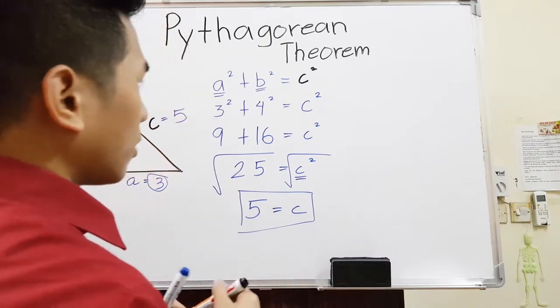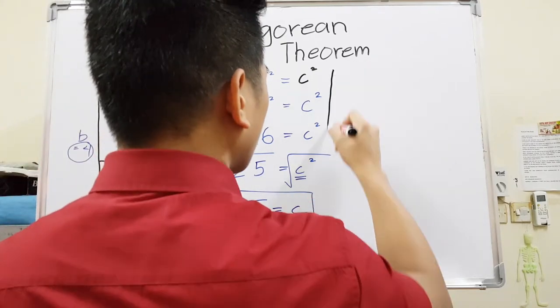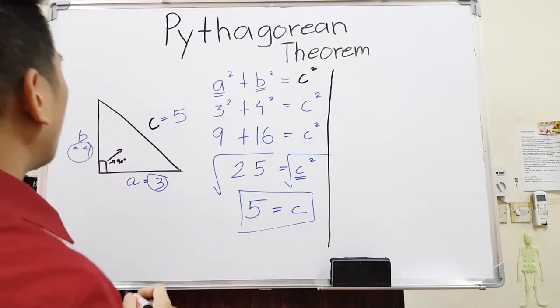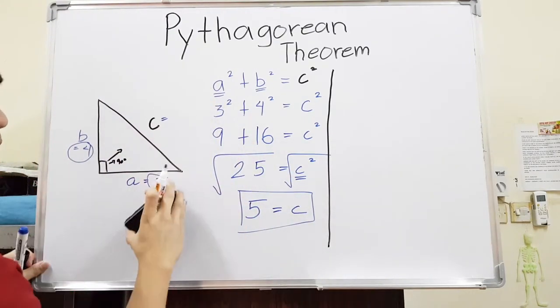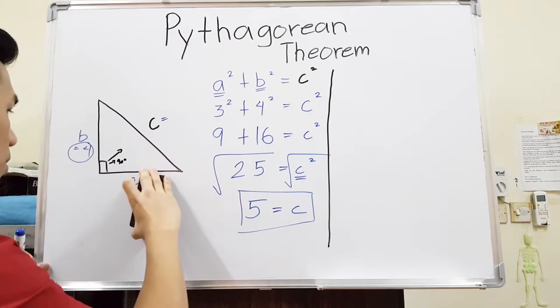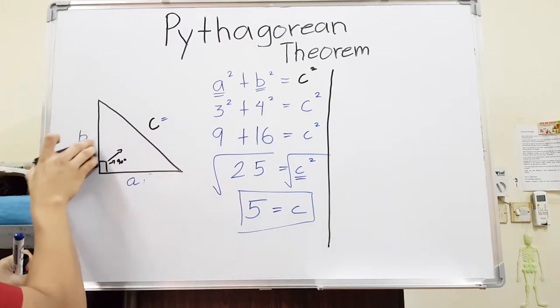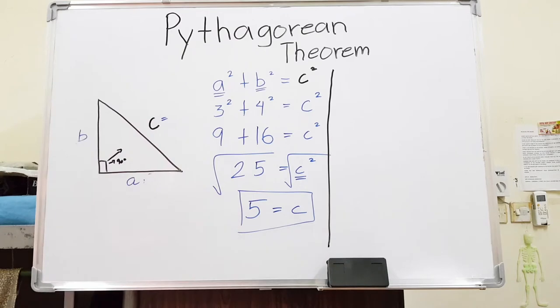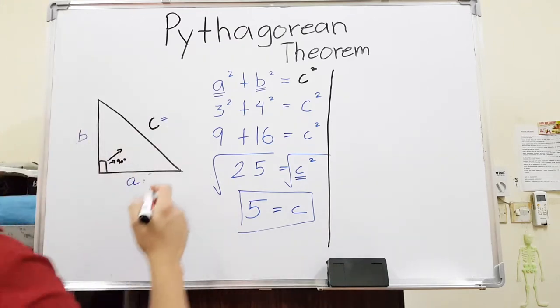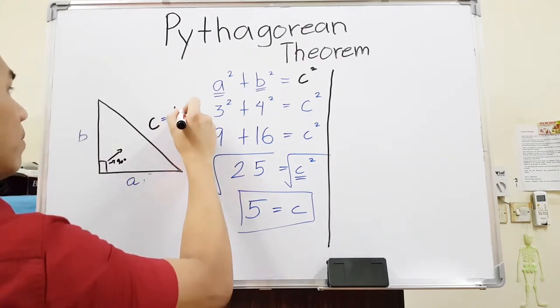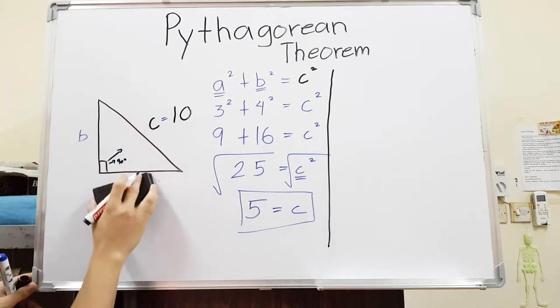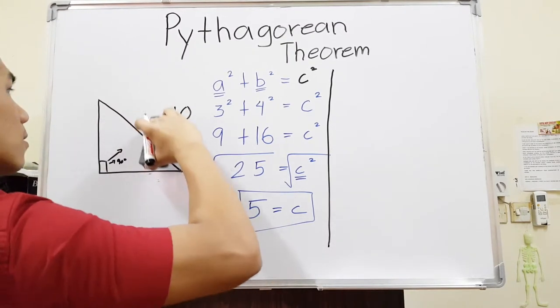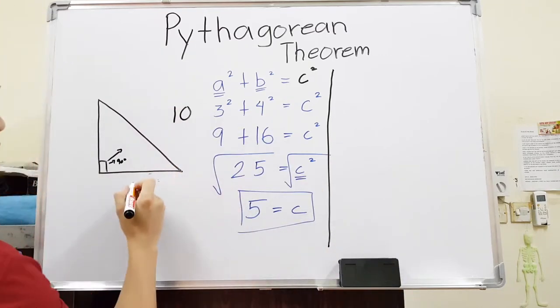Let's have another example. I'll just erase the triangle here—I mean the numbers, the values. For example, we are given the C. Let's say the C is 10. And one of the sides is, there's one side here given as, let's say 6.